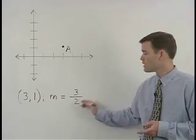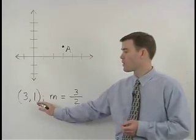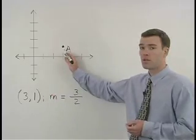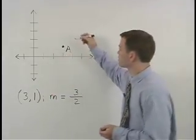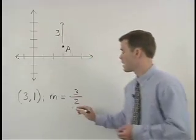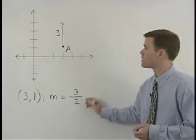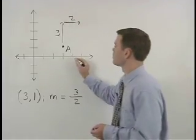Remember that slope means rise over run. So from our original point that we've already plotted, we rise 3 units 1 2 3 and run 2 units 1 2.